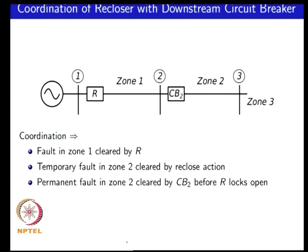Next we look at coordinating between a recloser and a circuit breaker, with an upstream recloser and a downstream circuit breaker. The recloser might be sitting at the substation and the circuit breaker further downstream. The recloser logic may also incorporate an underlying circuit breaker characteristic in addition to its reclosing behavior. The circuit breaker in this arrangement can be coordinated with CB2 as previously discussed.